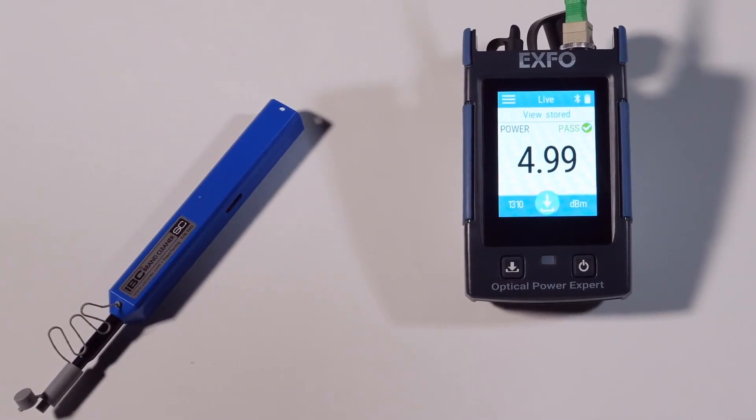In loss measurement mode, your unit displays the loss created by the fiber under test, since it subtracts a reference value from the measured power. You can set a different reference value for each wavelength. The reference values are kept in memory until you select new ones.